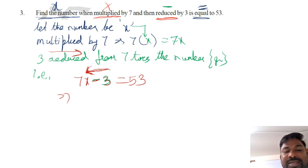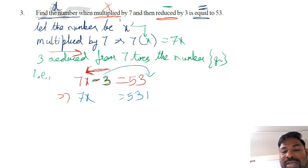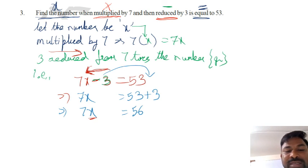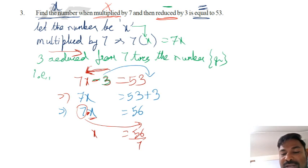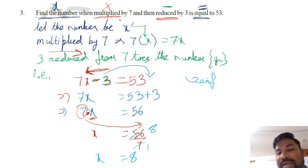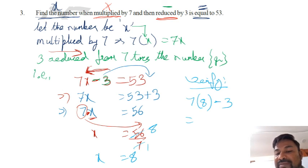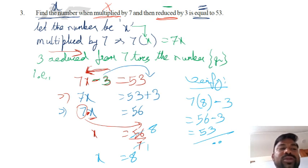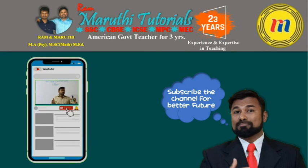Isolating: send −3 to the other side, so 7x = 53 + 3 = 56. Now divide: x = 56 ÷ 7 = 8. The number is 8. Verification: 7 times 8 is 56, minus 3 equals 53. Verified. This is how the keywords we learn are applied to word problems. Hope you understood — thank you. In this channel I have been placing both math and science videos.